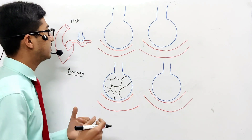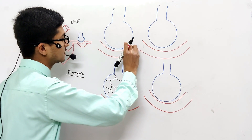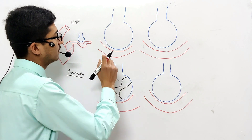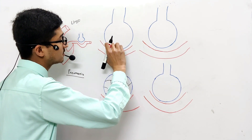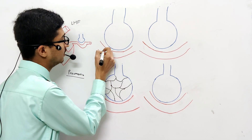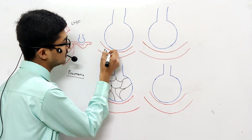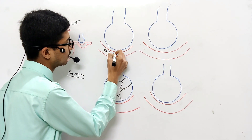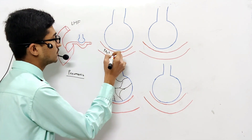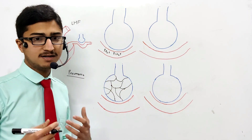The respiratory membrane is formed by the alveolar cells, interstitial space, and the capillary membrane. Now, what happens if this membrane becomes thick? The partial pressure of oxygen inside the blood decreases, and the partial pressure of carbon dioxide increases.